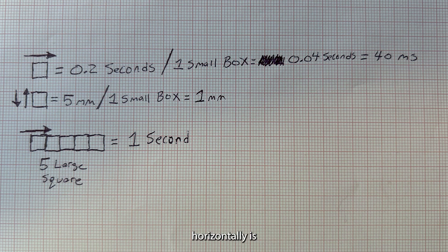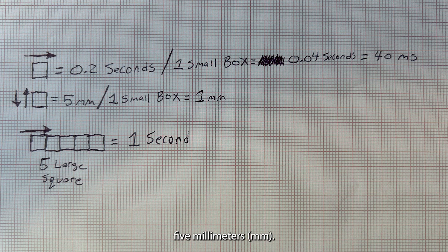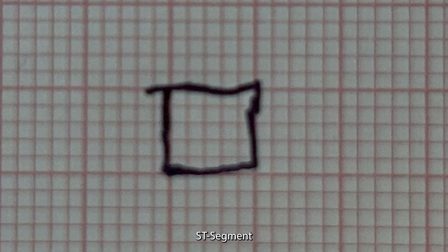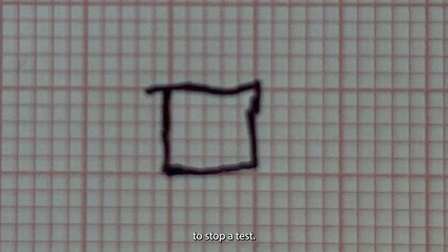One big box horizontally equals 0.2 seconds, so five big boxes together equals one second. One big box vertically equals five millimeters, and one small box within that big box equals one millimeter. During our stress test, we're watching the small boxes. One millimeter of ST segment elevation is an absolute indication to stop the test, while two millimeters of ST segment depression is a relative indication to stop the test.